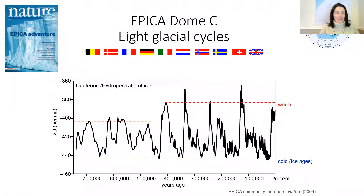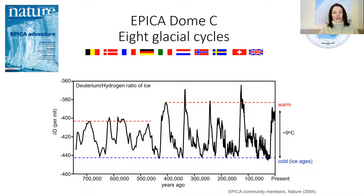I decided to start at the end, presenting what's arguably the most iconic ice core record that most people are probably familiar with: the EPICA Dome C ice core — the 800,000-year record that captured eight glacial cycles where East Antarctica shifted from very warm interstadial conditions through to very cold stadial conditions. The international ice core community are currently working towards drilling the next deep ice core, with hopes of extending this record beyond one million years.